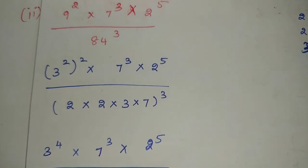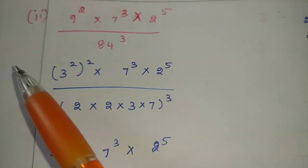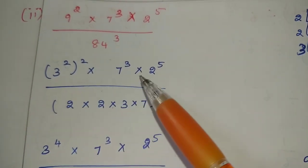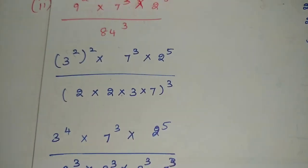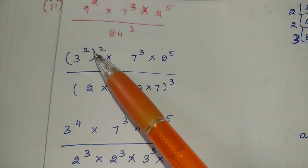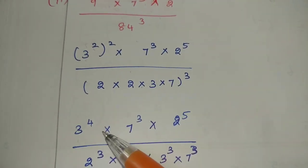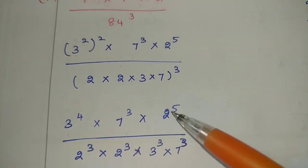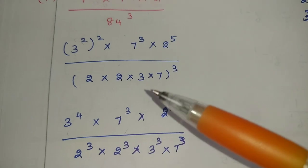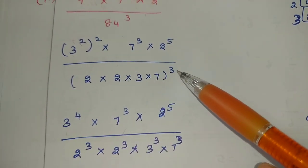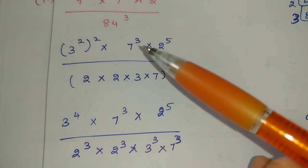7 threes are 21. So: 2 into 2 into 3 into 7, outside cube. Now, what rule to use? Power rule. We can do the product: 3 power 2 twos are 4, 7 power 3 into 2 power 5. How to do 3 to the 1 cube?